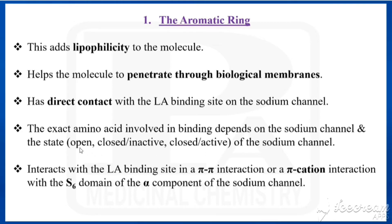The exact amino acid involved in binding depends upon the sodium channel and its state — whether it is open, closed, active, or inactive. This aromatic ring interacts with the local anesthetic binding site via a pi-pi interaction or a pi-cation interaction with the S6 domain of the alpha subunit of the sodium channel. The alpha subunit has four domains, and the S6 segment contains phenylalanine that binds with the aromatic ring to form this pi-pi or pi-cation interaction.